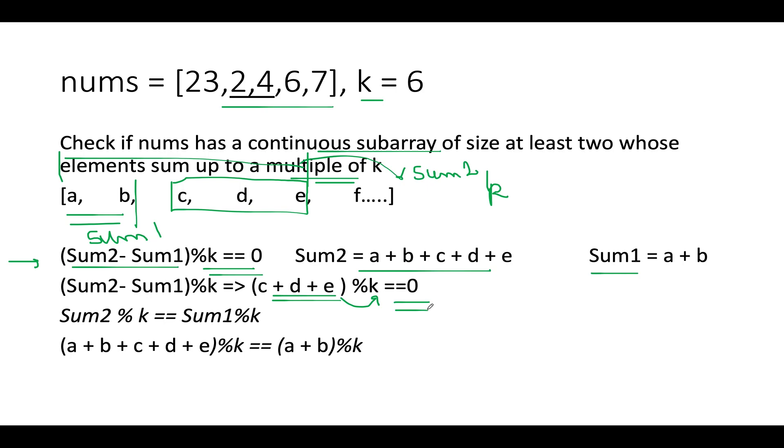Now how can we look at it differently? So let's go back to the same equation which is this one. Sum2 minus sum1 modulus k should be equal to 0.